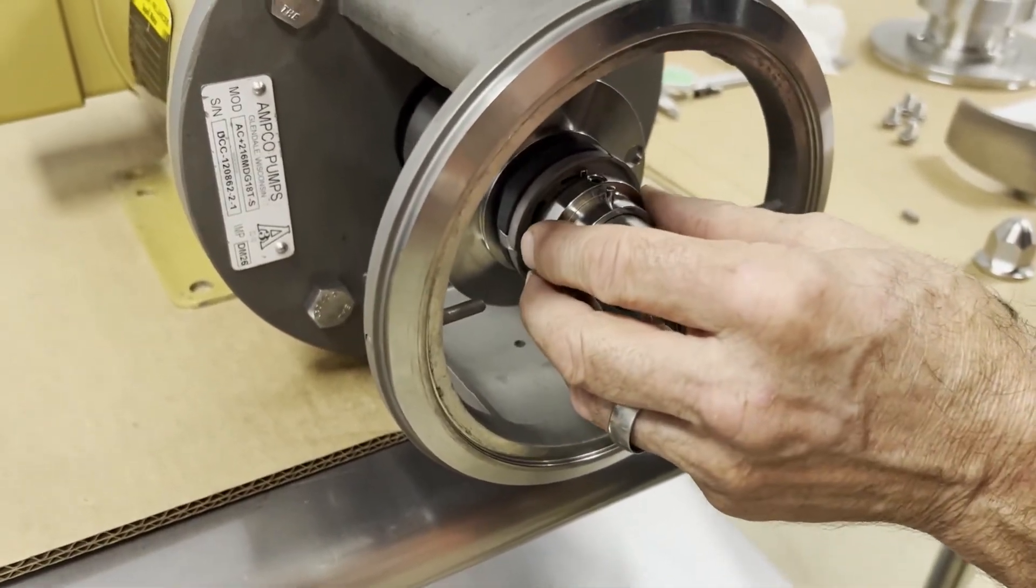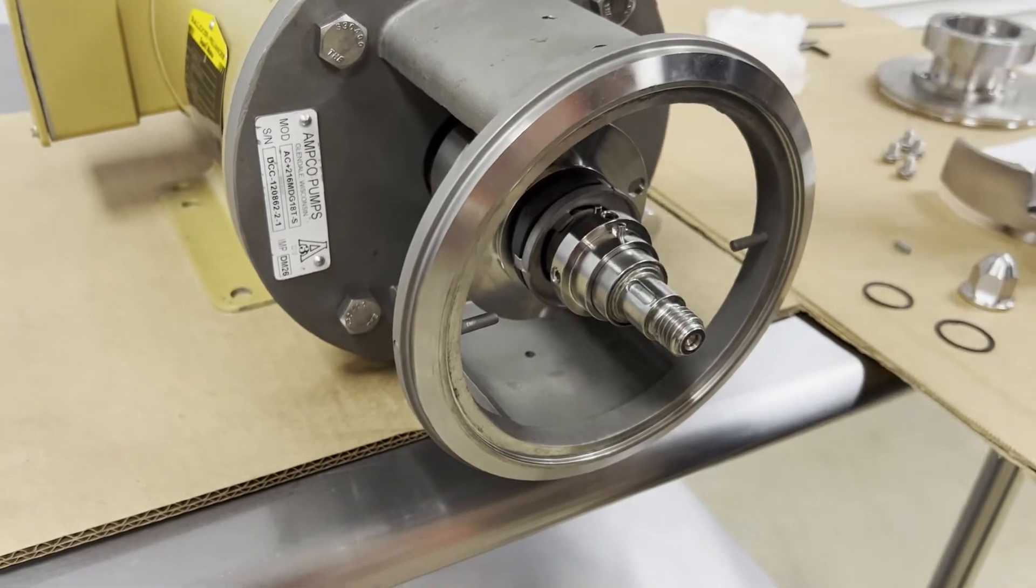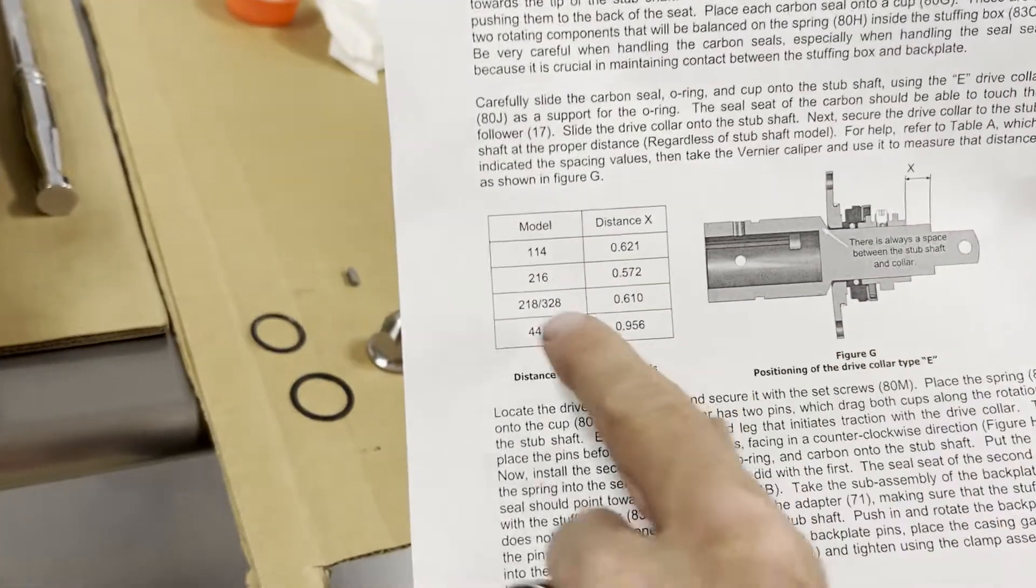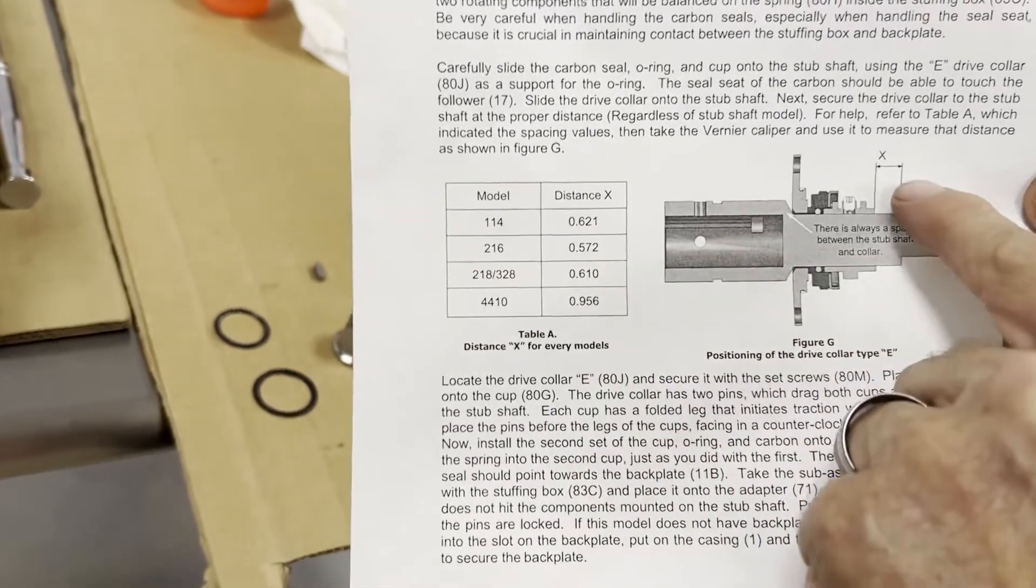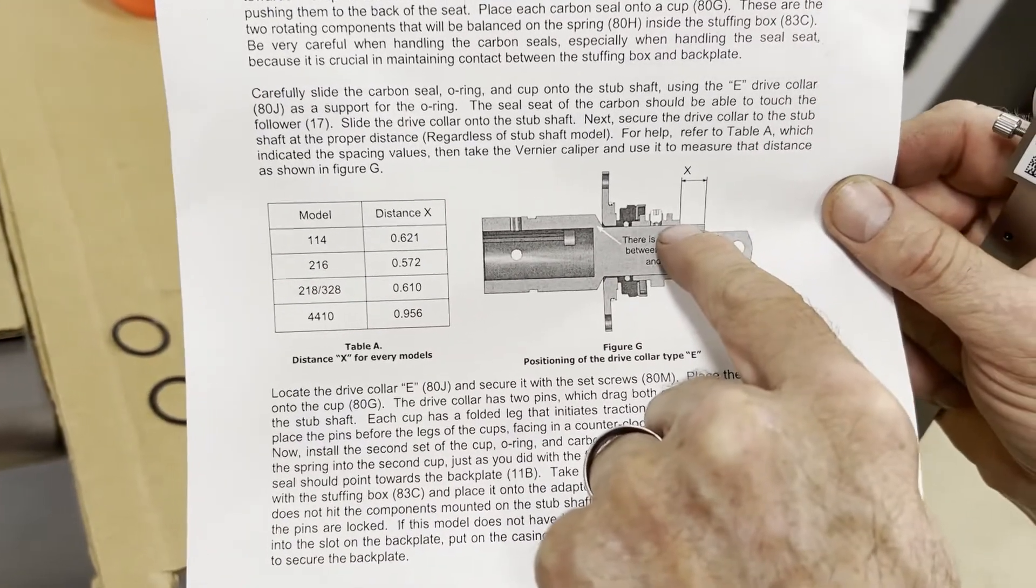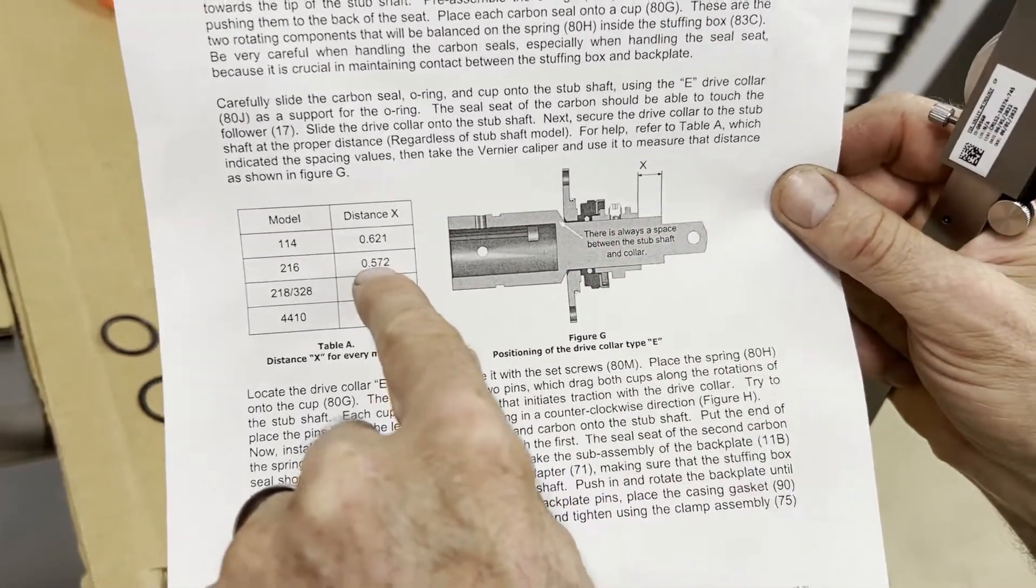Now I'm going to put the drive collar in. At this point, in our manual, this is a 216 pump. There's a dimension given here from the shaft shoulder to the drive collar nose: 0.572.